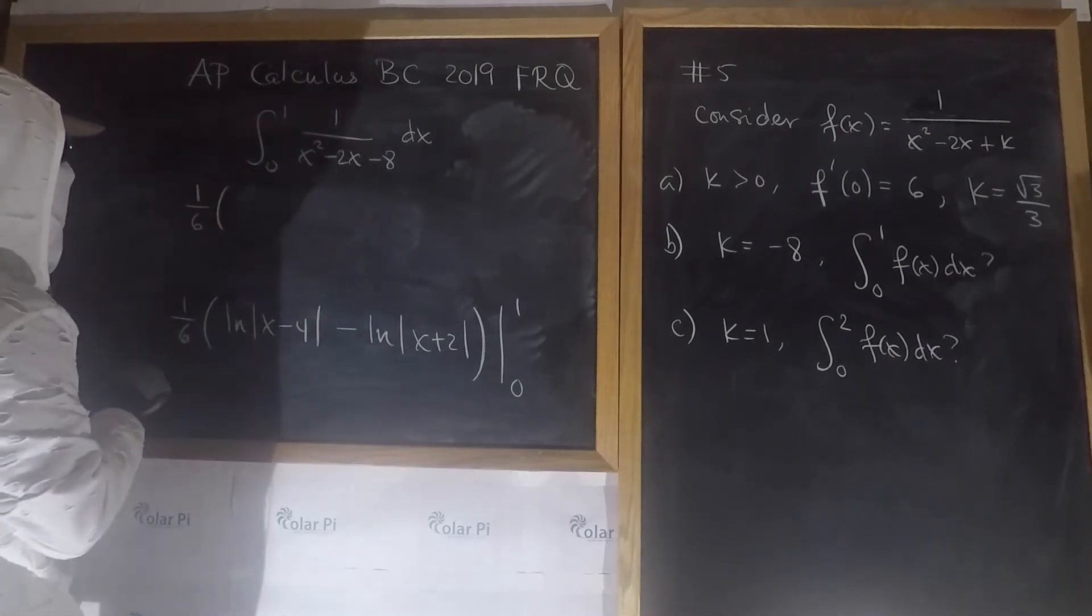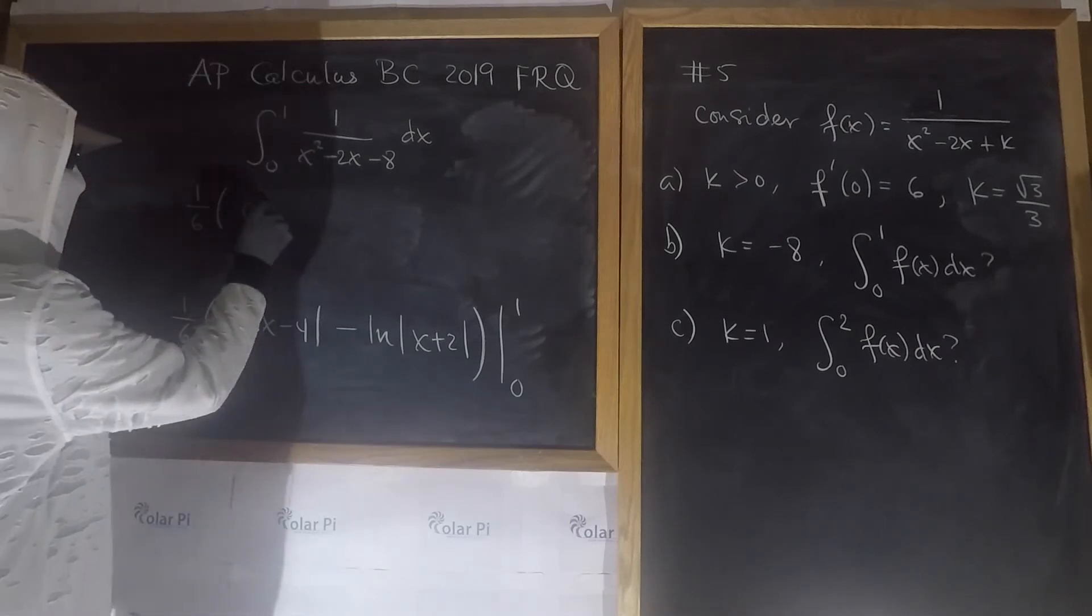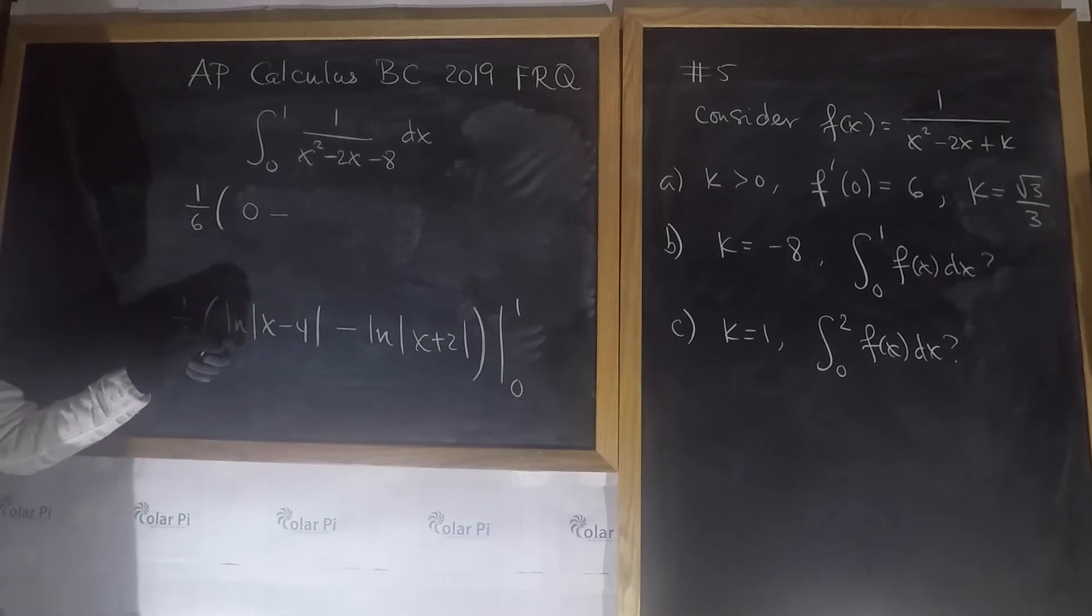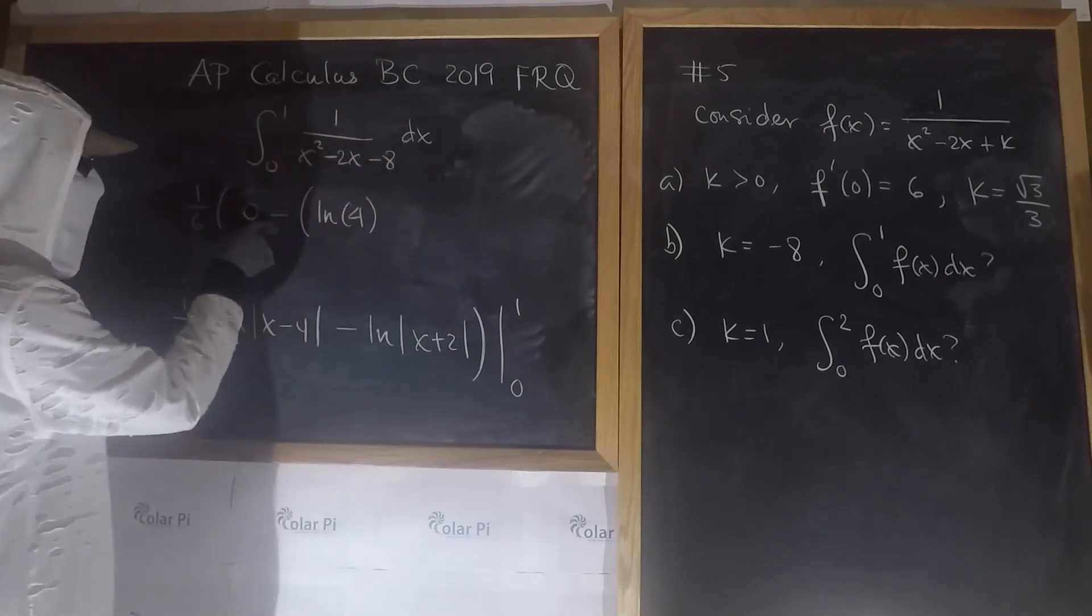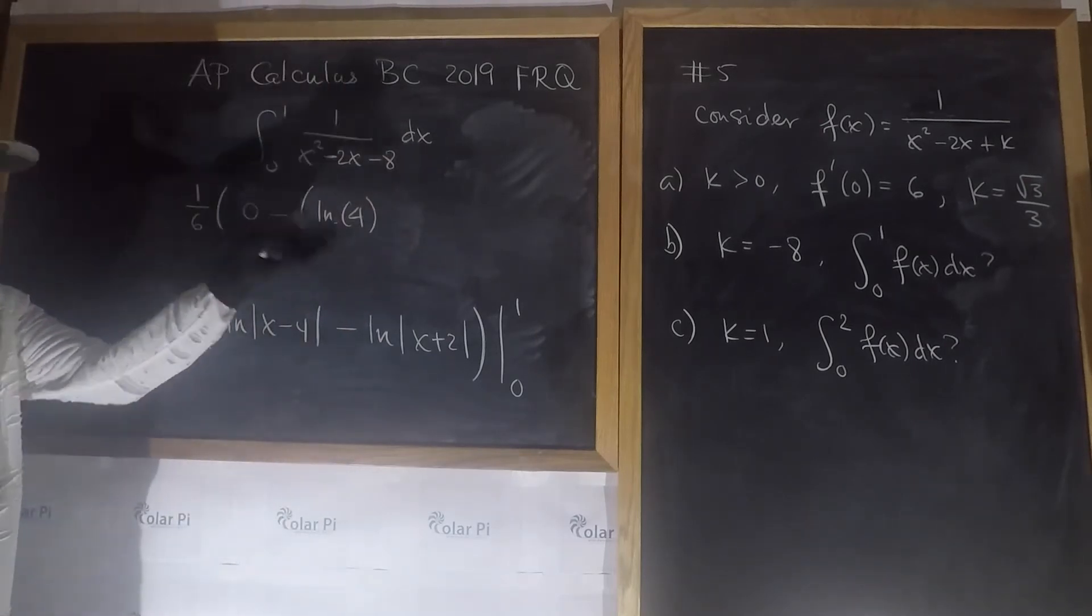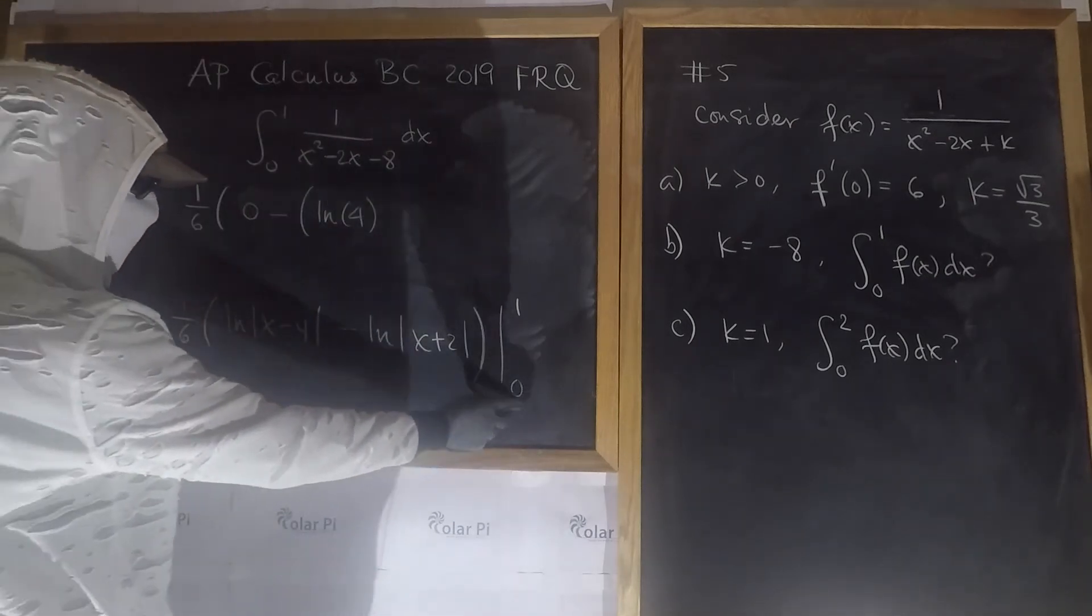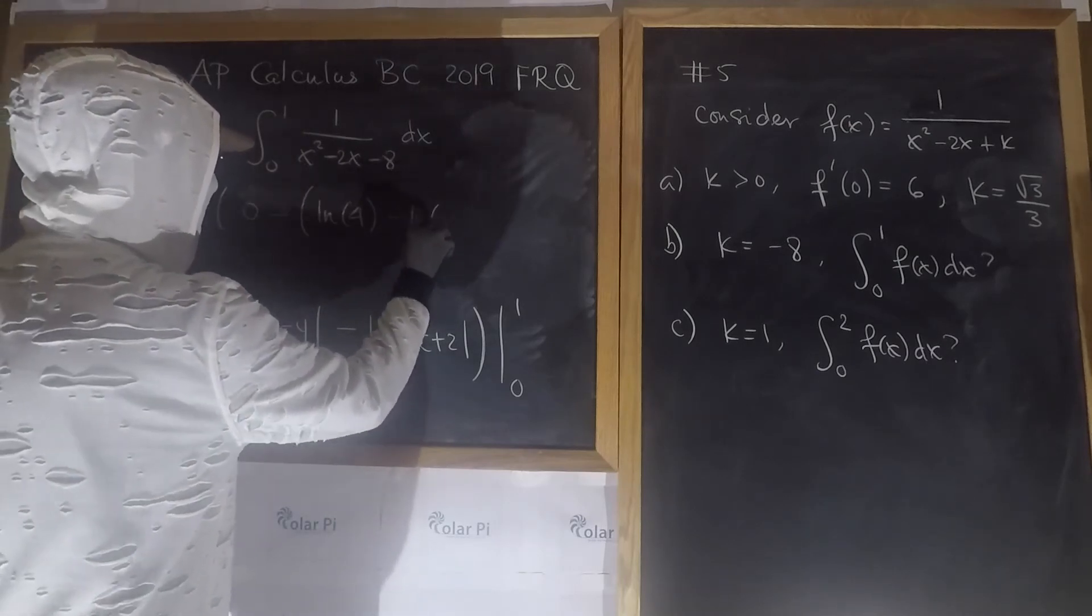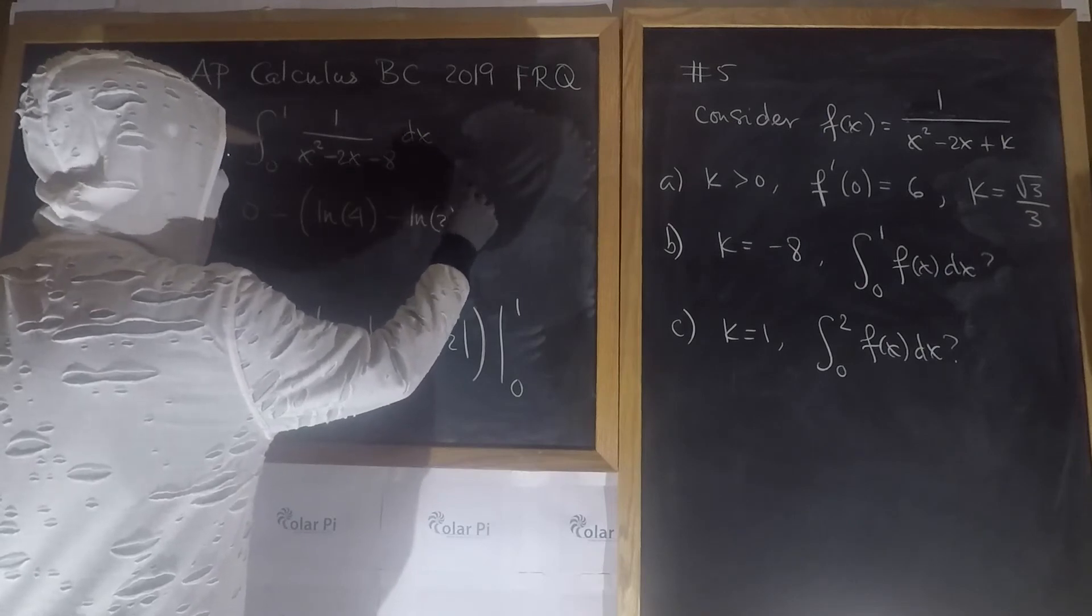And then, minus, and the minus is from that, this here is going to be the natural log of the absolute value of x plus 2. And we need to evaluate from 0 to 1. So if I plug in 1, what do I get? I get a 6th times the natural log of, when I plug in 1, I get 3. So the natural log of 3. And then, minus, when I plug in 1, this 2 is the natural log of 3. How convenient.